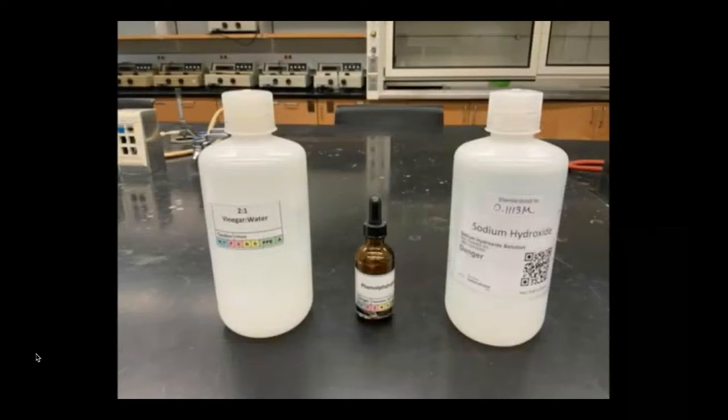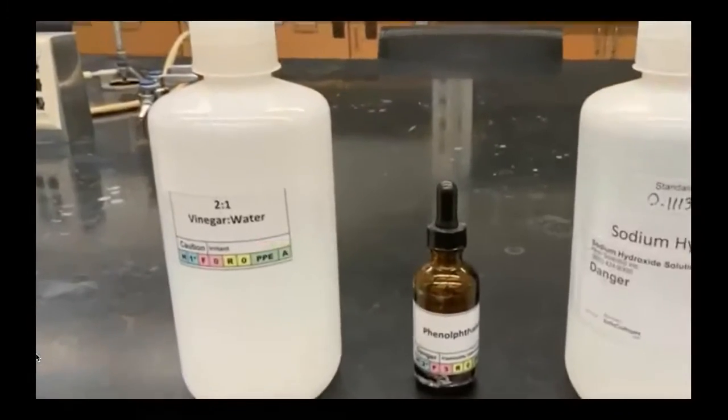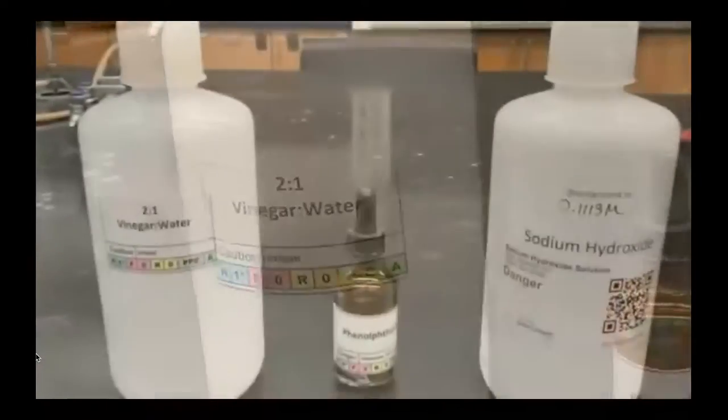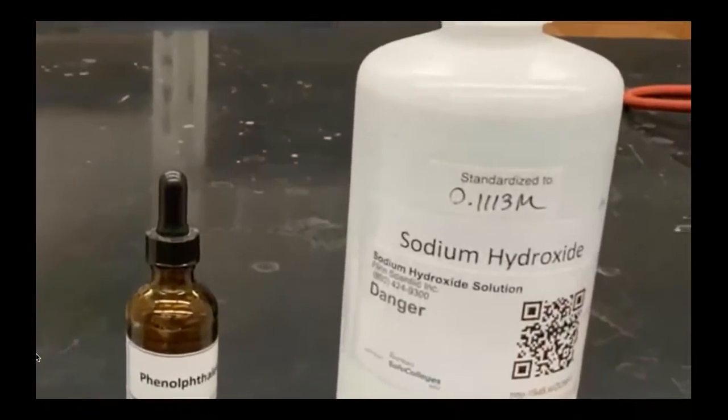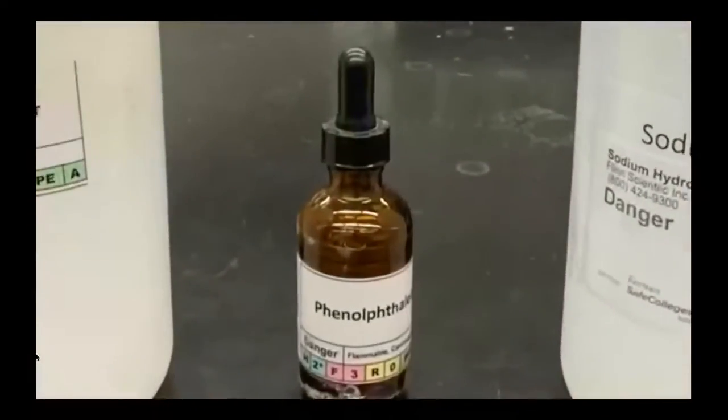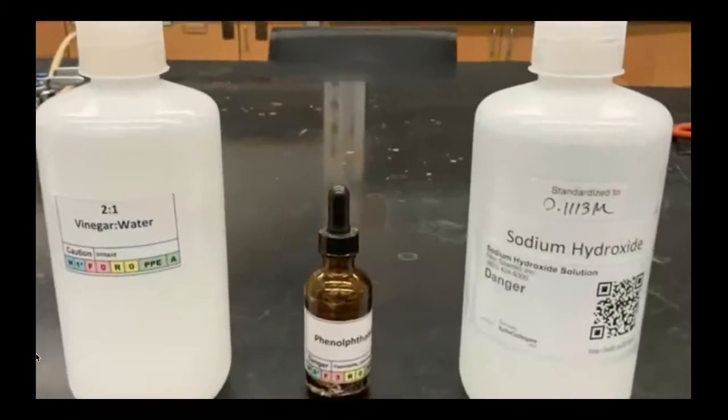In this titration lab, we'll start by gathering our necessary materials. We have vinegar, which we are trying to find the amount of acid in. We have our standard, sodium hydroxide, and our indicator, phenolphthalein.